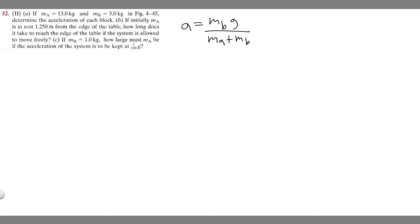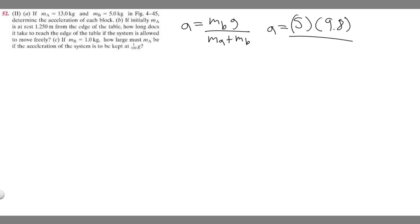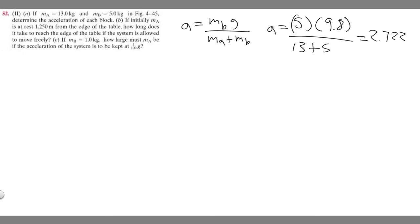They're telling us m sub a is equal to 13 and m sub b is 5, so we're just going to plug it into this and solve for a. Acceleration is going to be m sub b, which is 5, times g, which is gravity, which is 9.8, over m sub a which is 13 plus m sub b which is 5. So 5 times 9.8 over 13 plus 5 gives us 2.722, which is about 2.7 meters per second squared. This is your answer for part a.